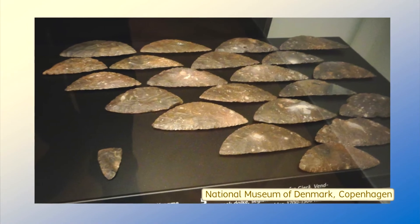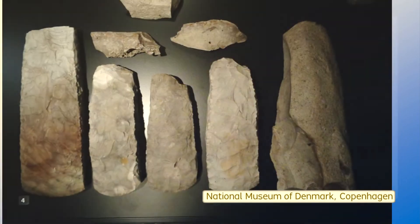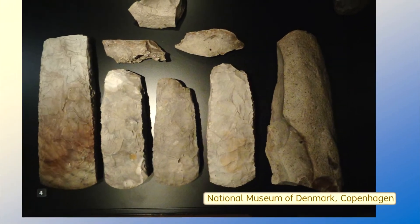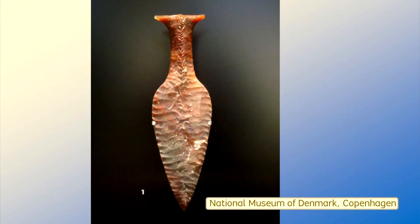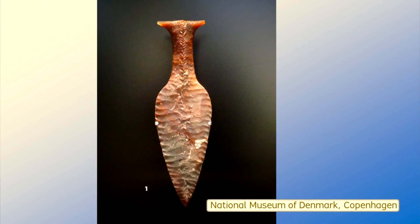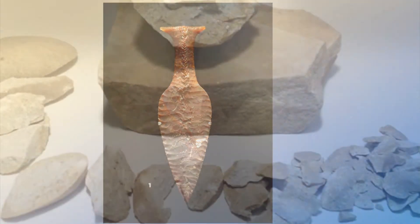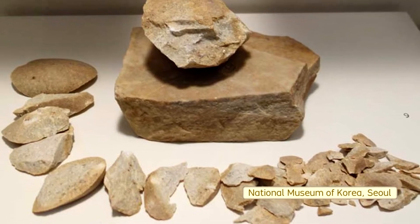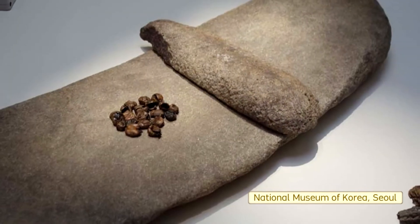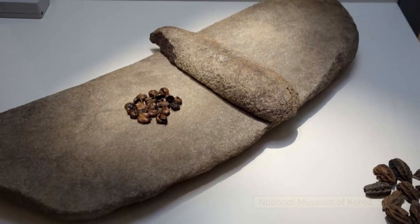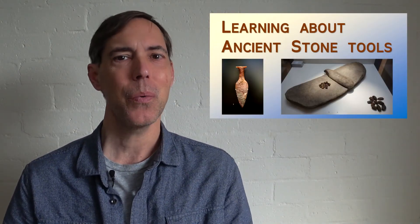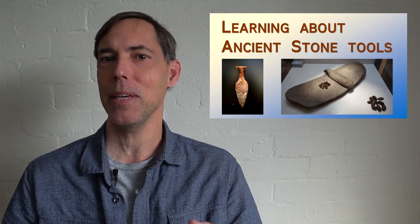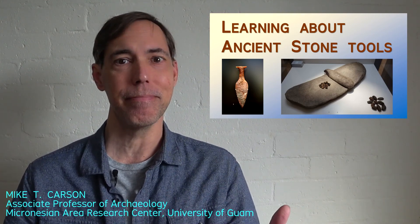A few different approaches are possible for studying ancient stone tools and artifacts. The most straightforward approaches involve direct physical observations and material evidence with a limited role of interpretive inference. The results could be inconclusive while allowing for more research to develop a confidently correct conclusion. What are your experiences with studying ancient stone tools and artifacts? What issues do you find to be problematic or helpful? Thank you for watching.